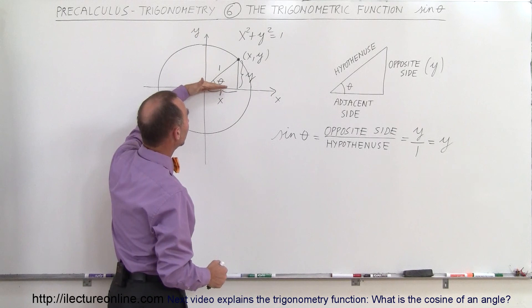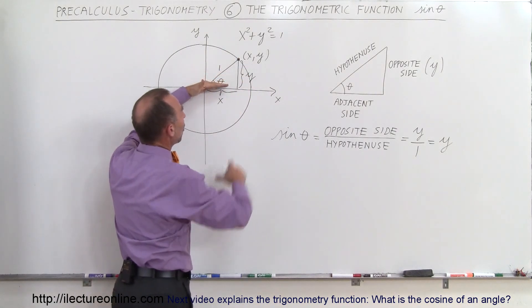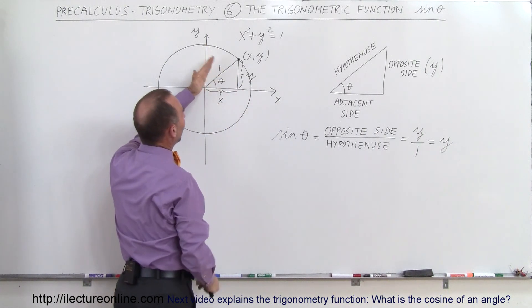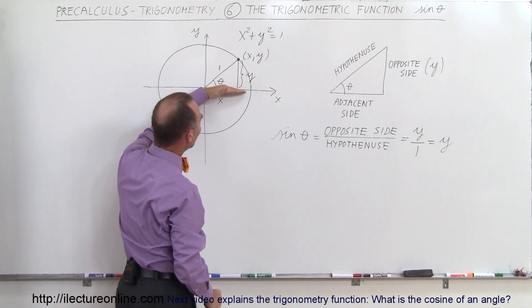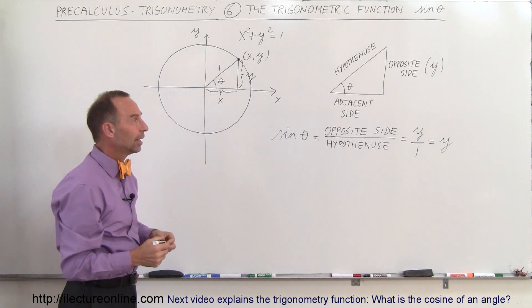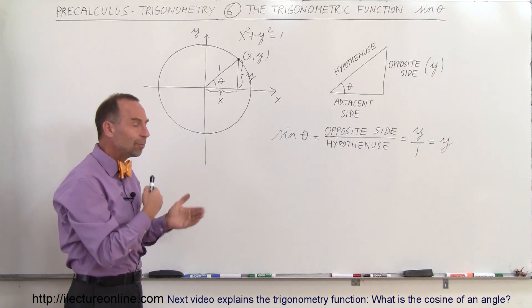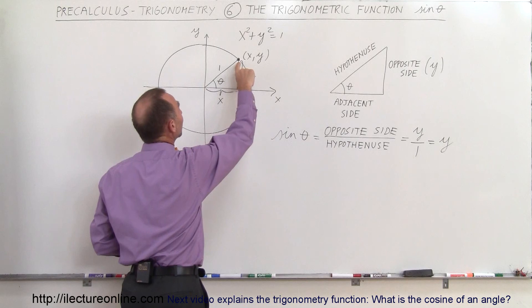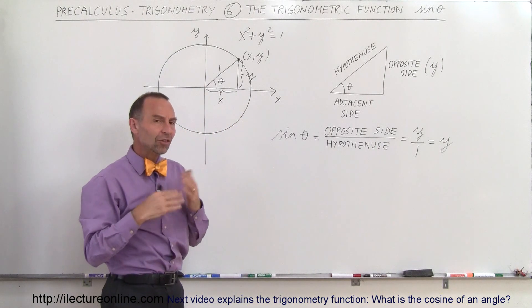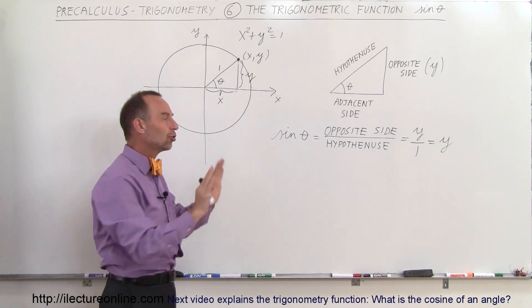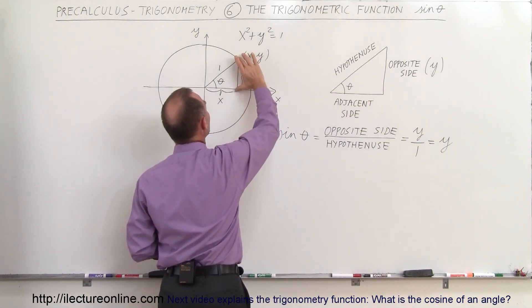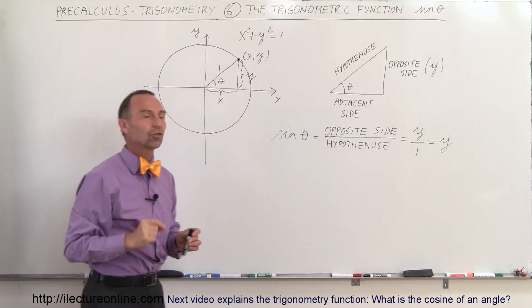Notice that if the angle gets bigger, y gets bigger. If the angle gets smaller, y gets smaller. If the angle is 0 degrees, then y is 0. If the angle is 90 degrees, then y equals 1. The y value will be between 0 and 1 as the angle changes from 0 to 90 degrees — or from 0 to pi over 2 in radians. The sine of theta is simply the relationship between the angle and the opposite side, as long as we use a unit circle where the hypotenuse equals 1.